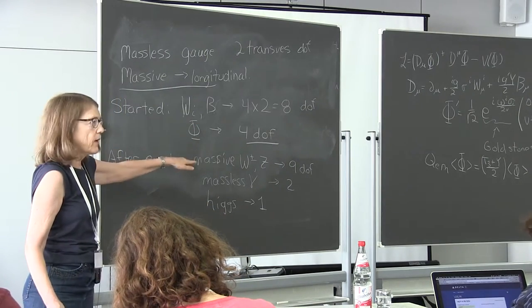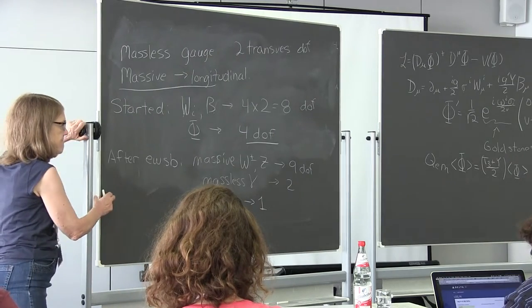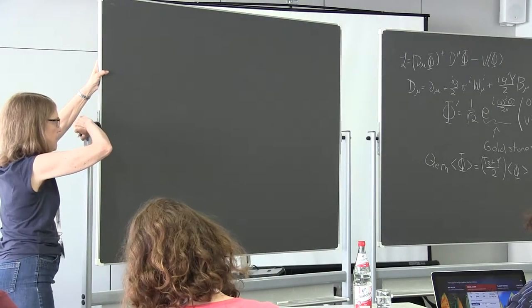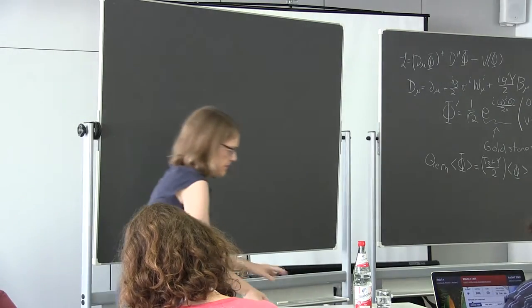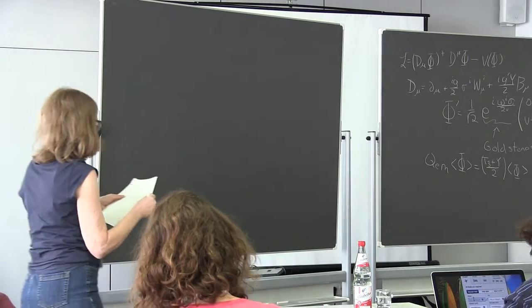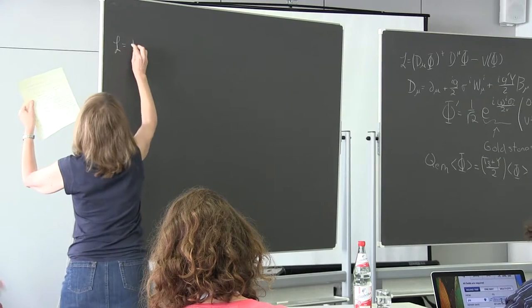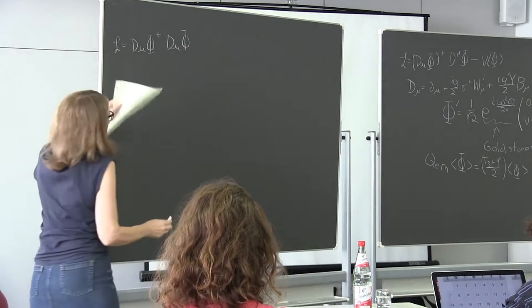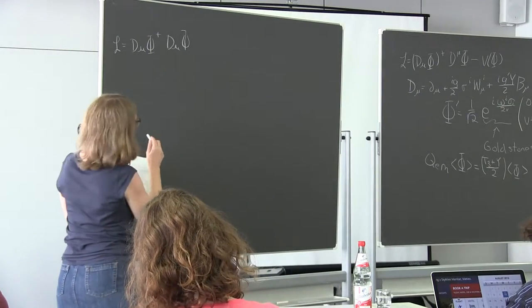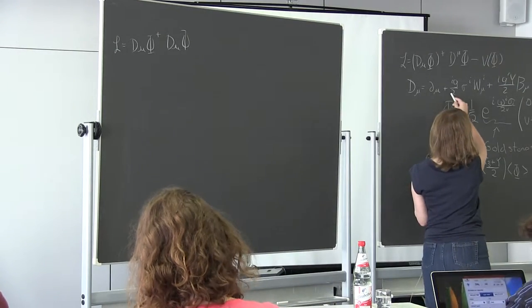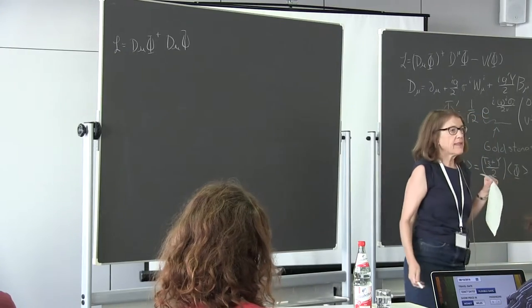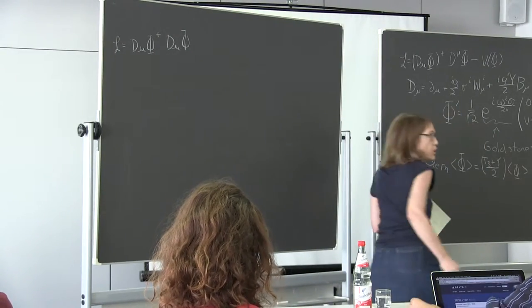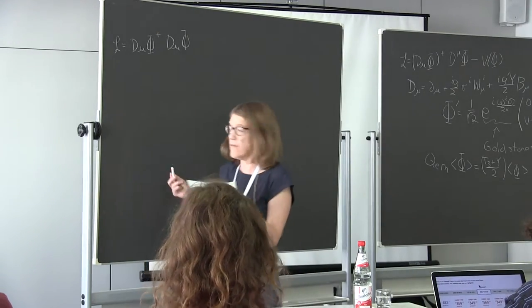Let's spend a couple of seconds seeing how this miracle works — starting from the kinetic term D_μ φ† D^μ φ and getting masses for the gauge bosons. There's a 1/√2 from each φ, giving a factor of 1/8 overall. I'm going to put in just the v part to get the masses.